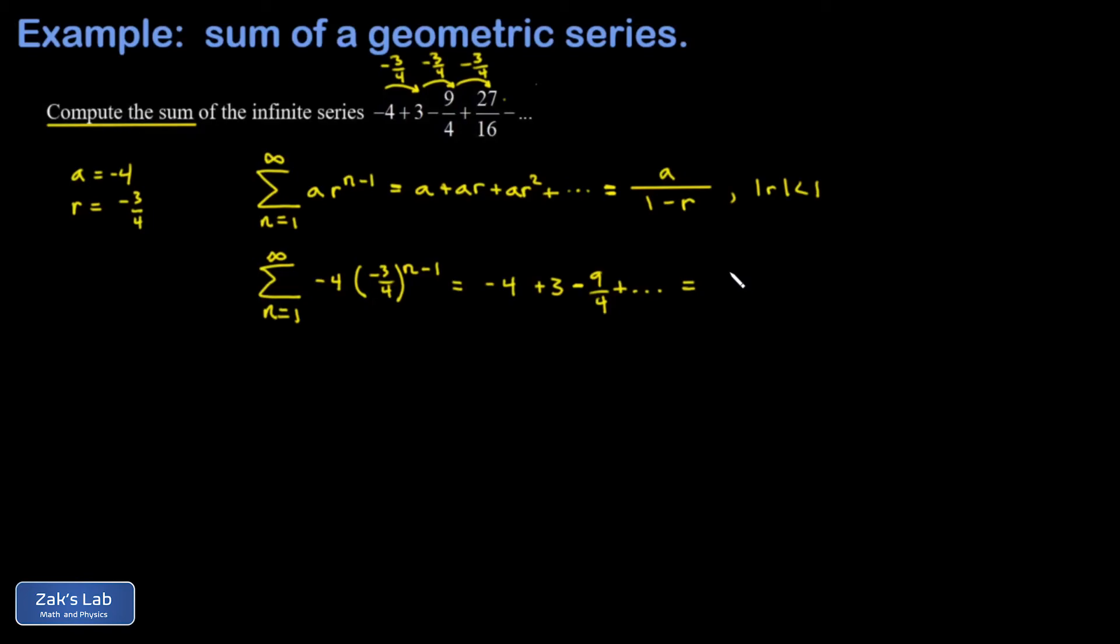And then we just quote the formula for the sum of a geometric series. I end up with a, which was negative 4, over 1 minus r. So 1 minus negative 3 fourths. I'll go ahead and cancel the minus signs right there. And in that denominator, I have 1 plus 3 fourths, which is 4 fourths plus 3 fourths.